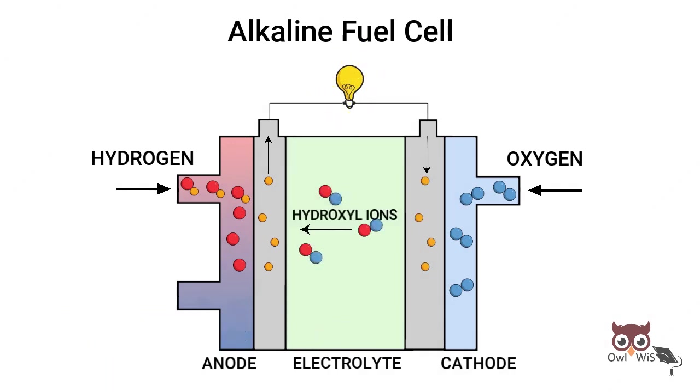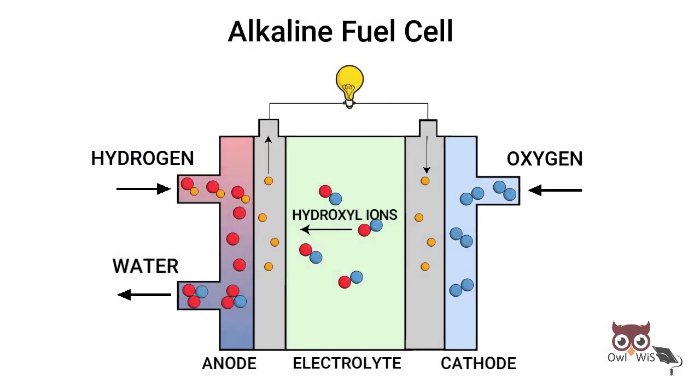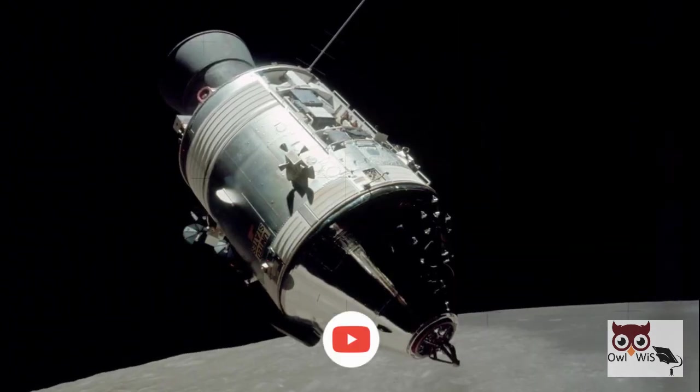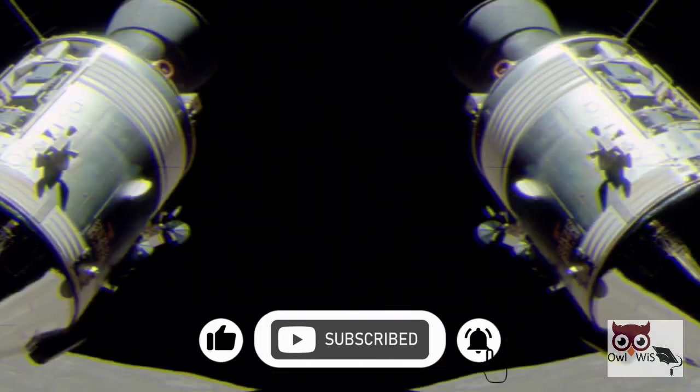A significant drawback for this fuel cell is its susceptibility to carbon dioxide contamination. Alkaline fuel cells were used as primary source of electrical energy in the Apollo space program.